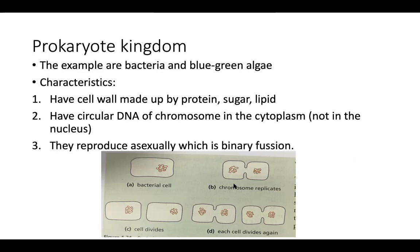Bacteria reproduce asexually by binary fission. First, the chromosome replicates from one to two copies. Then the cytoplasm divides equally. This results in two bacteria from one. From two, it becomes four, and so on — each cell undergoes the same process.